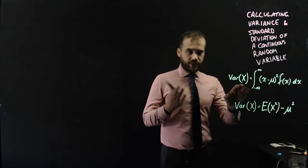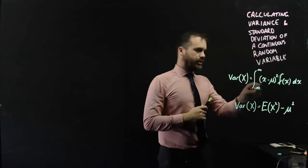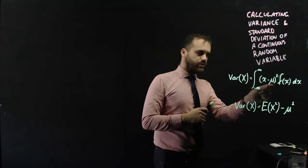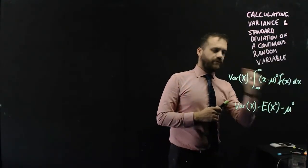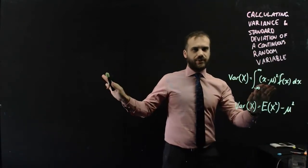The variance of the random variable x is equal to integral between infinity and negative infinity, x minus the mean, that little mu there is the mean, all squared, times f of x. And the mean, you already know how to calculate the mean, but you'll have to do a separate calculation for that.